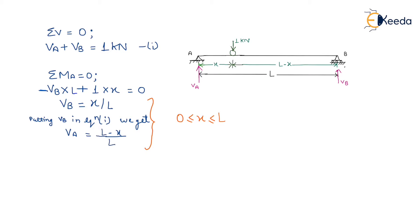The second equilibrium condition is moment about A equals zero. From this, we get the equation: minus VB into L — negative because of anti-clockwise movement — plus 1 into x, because of clockwise movement. So VB equals x divided by L. On putting the value of VB into equation 1, we get VA equals (L minus x) divided by L. This is valid for the range of x between 0 to L.